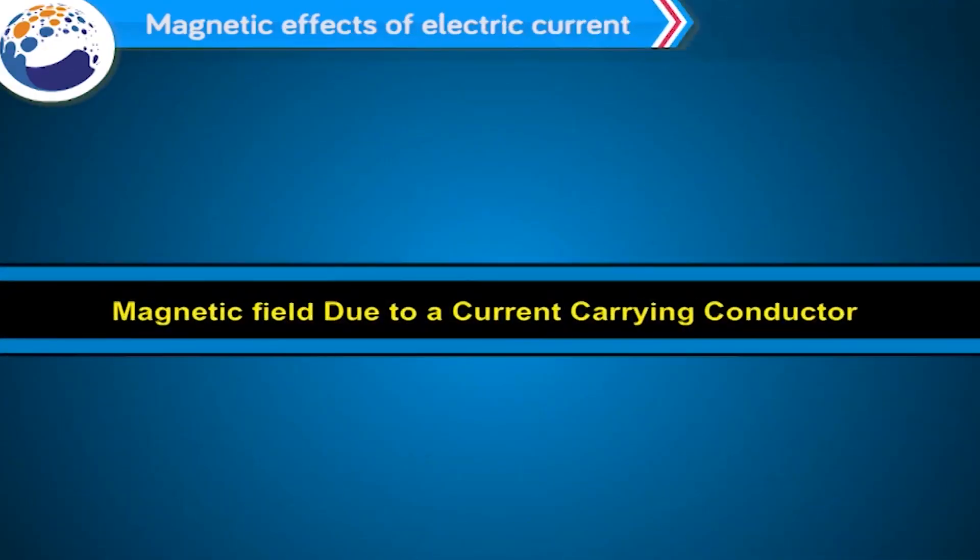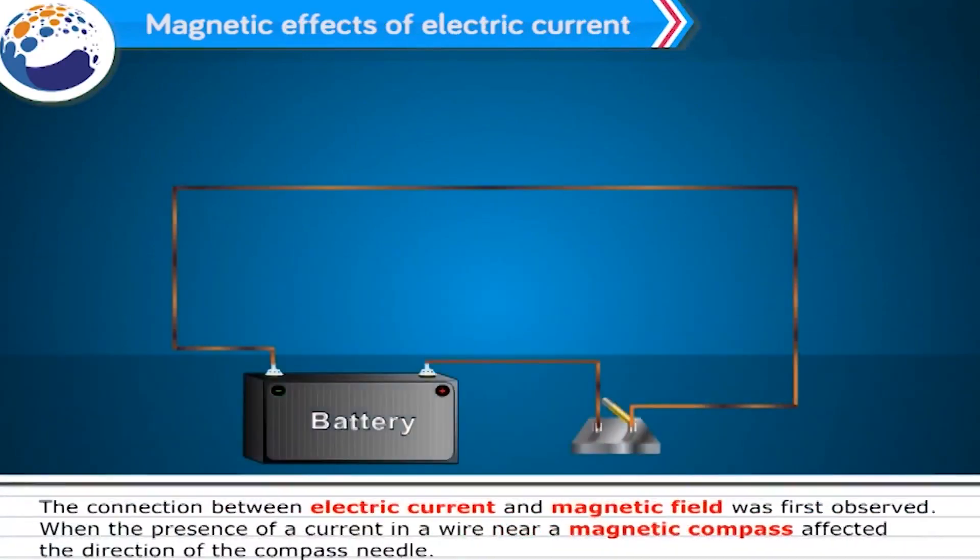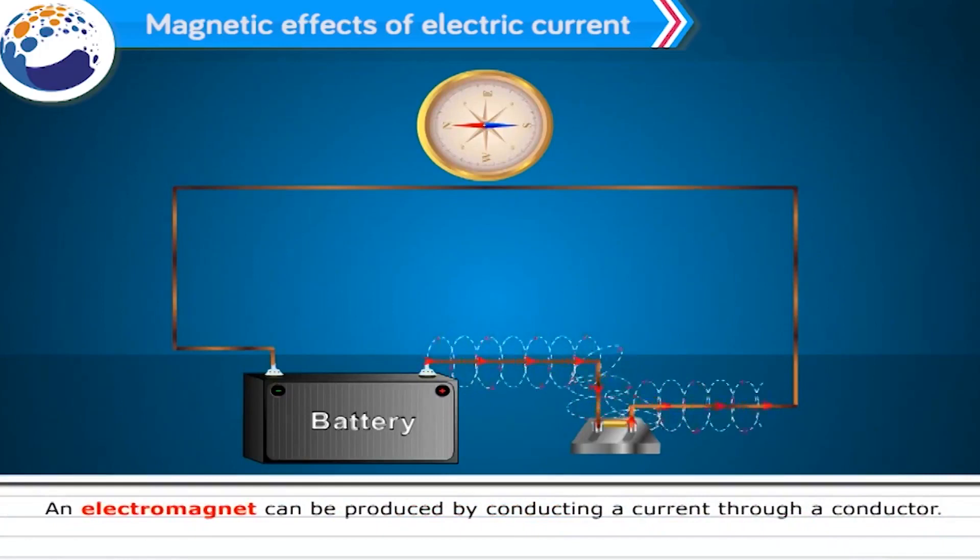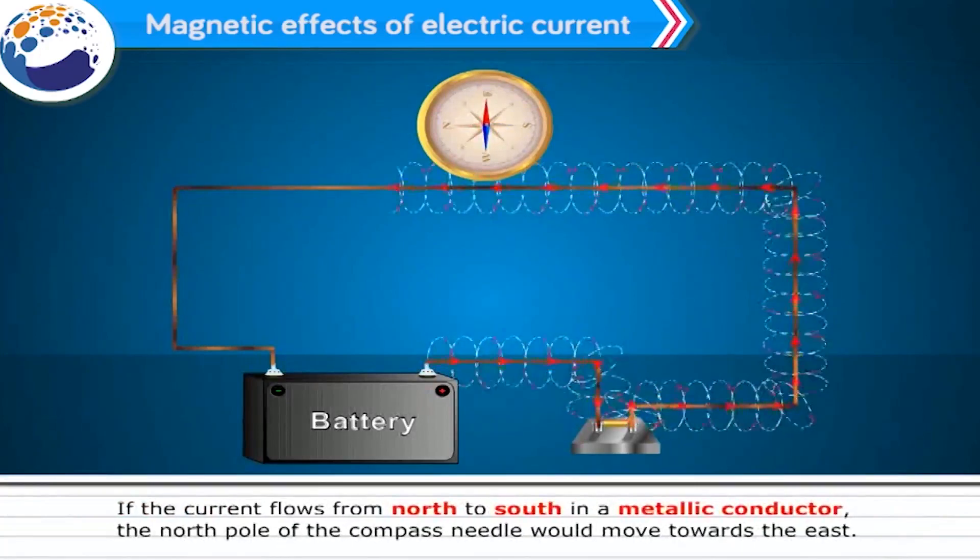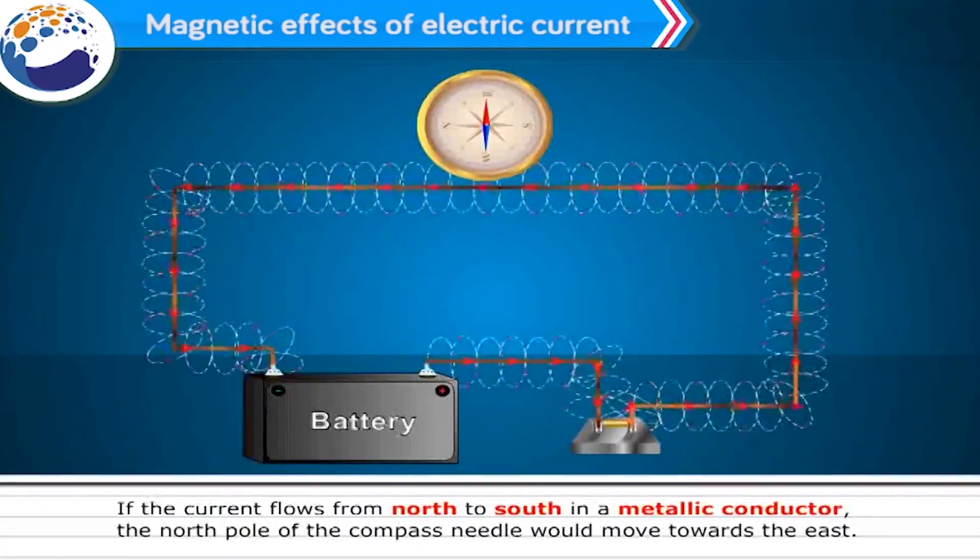Magnetic field due to a current-carrying conductor. The connection between electric current and magnetic field was first observed when the presence of a current in a wire near a magnetic compass affected the direction of the compass needle. We now know that current gives rise to magnetic fields, just as electric charge gives rise to electric fields. An electromagnet can be produced by conducting a current through a conductor. If the current flows from north to south in a metallic conductor, the north pole of the compass needle would move towards the east.